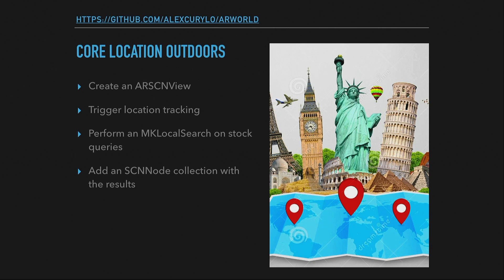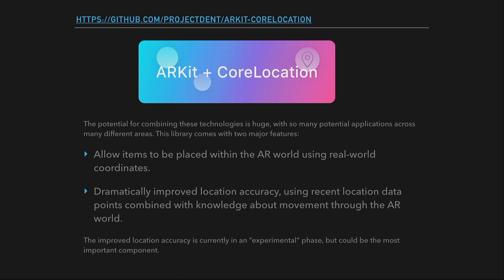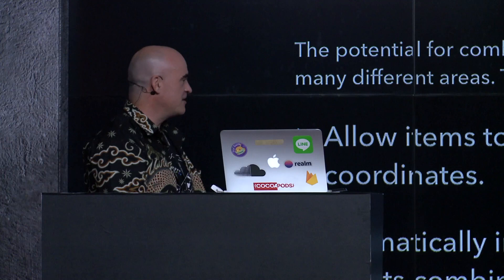Our next demo, 'AR World,' uses Core Location outdoors. We're going to do a Scene Kit view, track our location, do a local search, and add nodes representing where the searched things are in the real world. All the math is up on GitHub in a project called 'ARKit Core Location,' so we skip the boring parts. The big problem right now is they can't get north reliably — there isn't enough magnetometer accuracy to precisely place things in the real world, which is why this demo only shows things at a distance.